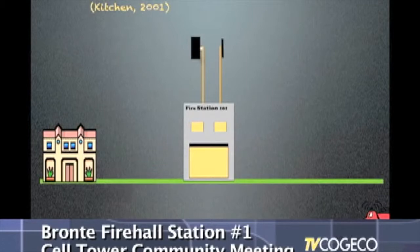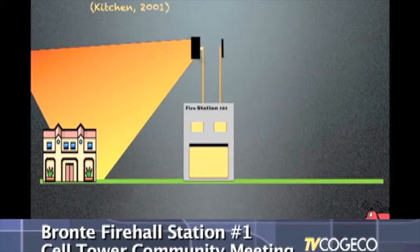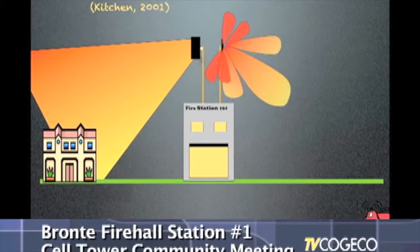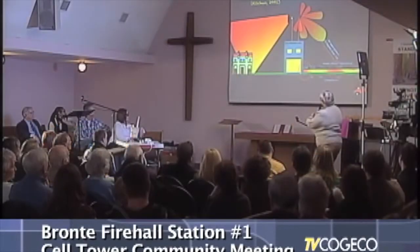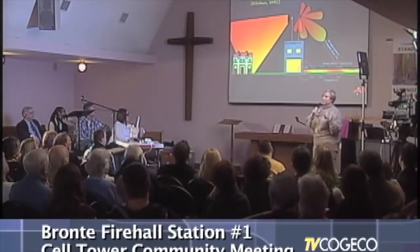Now we have an example of how these antennas should work. This is a sector antenna, and ideally this is the type of radiation pattern you should get from it. In reality, however, these antennas have something called a side lobe, which means some of the radiation goes off in a direction they really don't want it to go. Looking at the radiation pattern, you can see very high levels of radiation at a distance of about 200 meters with this particular configuration, but you also have very high levels immediately beneath the antenna.